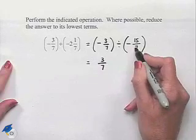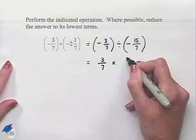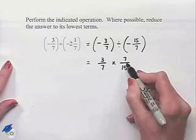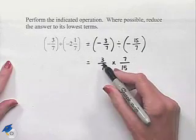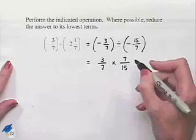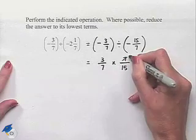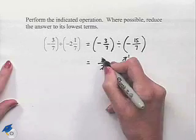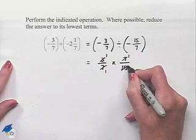We're now going to take the 3 sevenths and we're going to change the division by a fraction into multiplication by the reciprocal, so we're going to have 7 fifteenths. Next we notice that we have common factors between numerators and denominators. We can divide this numerator by 7, 7 divided by 7 is 1, this denominator by 7. We can divide this numerator by 3 and this denominator by 3.